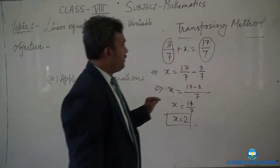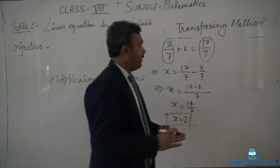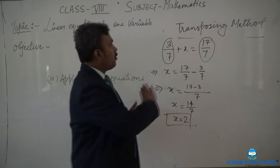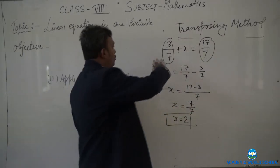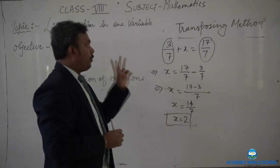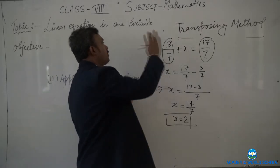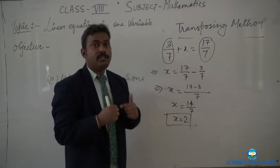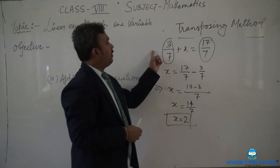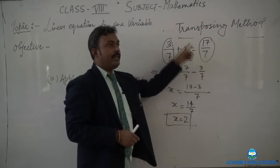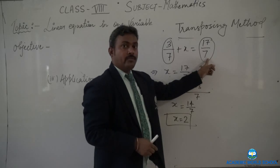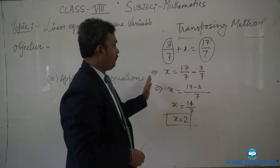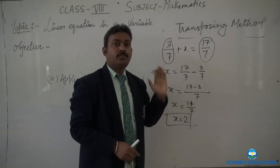So we studied two methods. In the balancing method, we keep both sides balanced by adding or subtracting the same value on each side. In the transposing method, we transpose values of the same type together. Two important rules: when we transpose, the operation changes — addition becomes subtraction, subtraction becomes addition, multiplication becomes division, and division becomes multiplication when a value moves to the other side.